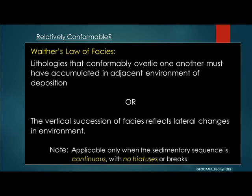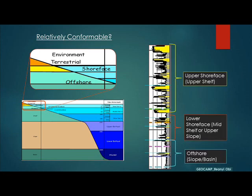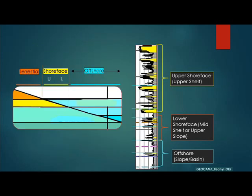A vertical succession of facies reflects lateral changes in environments. This well-log shows an example of a vertical succession of environments of deposition. Here we have the upper shoreface interval at the shallowest section, below it the lower shoreface facies, and the offshore facies at the basal section. Projecting this to the bathymetric section shown here, we see the upper and lower shoreface just side by side, and right to the side of the lower shoreface, we have the offshore zone — which is expected.